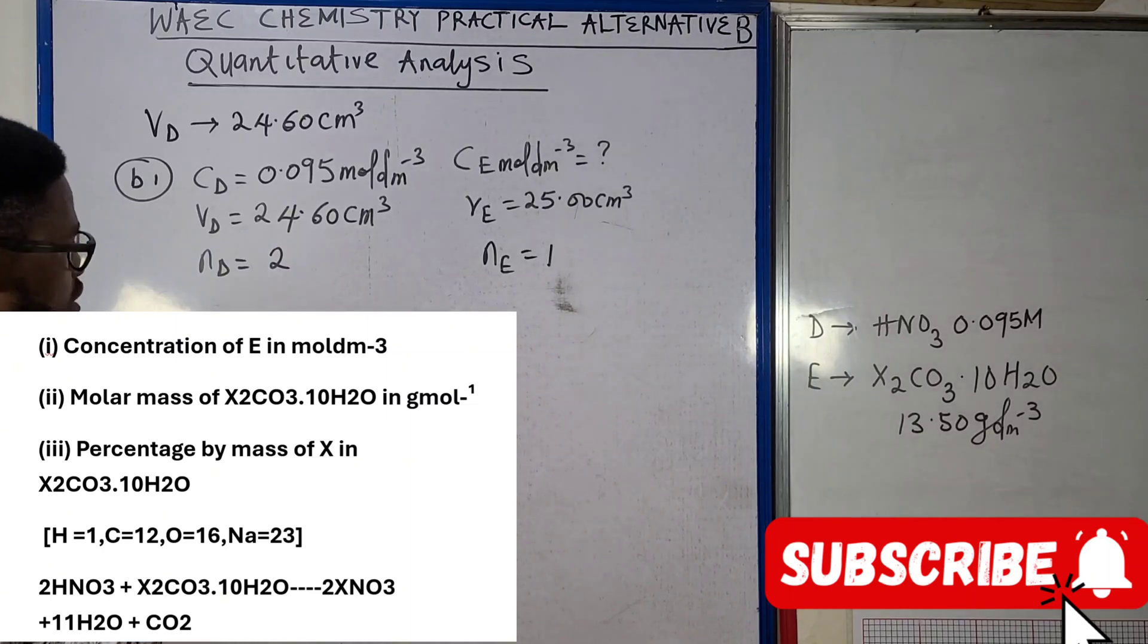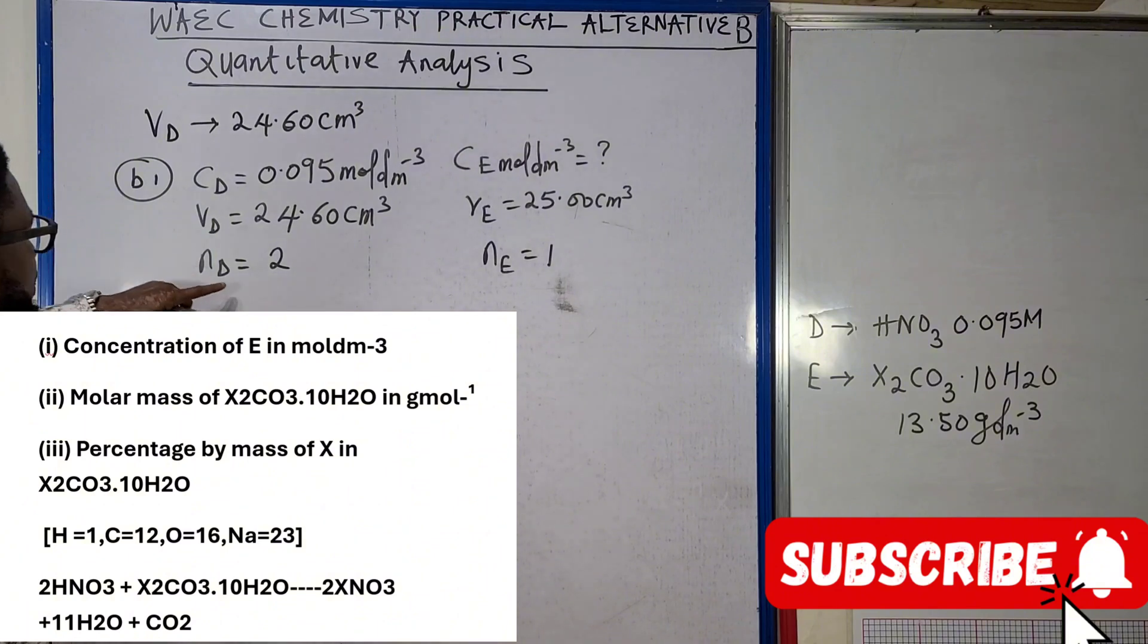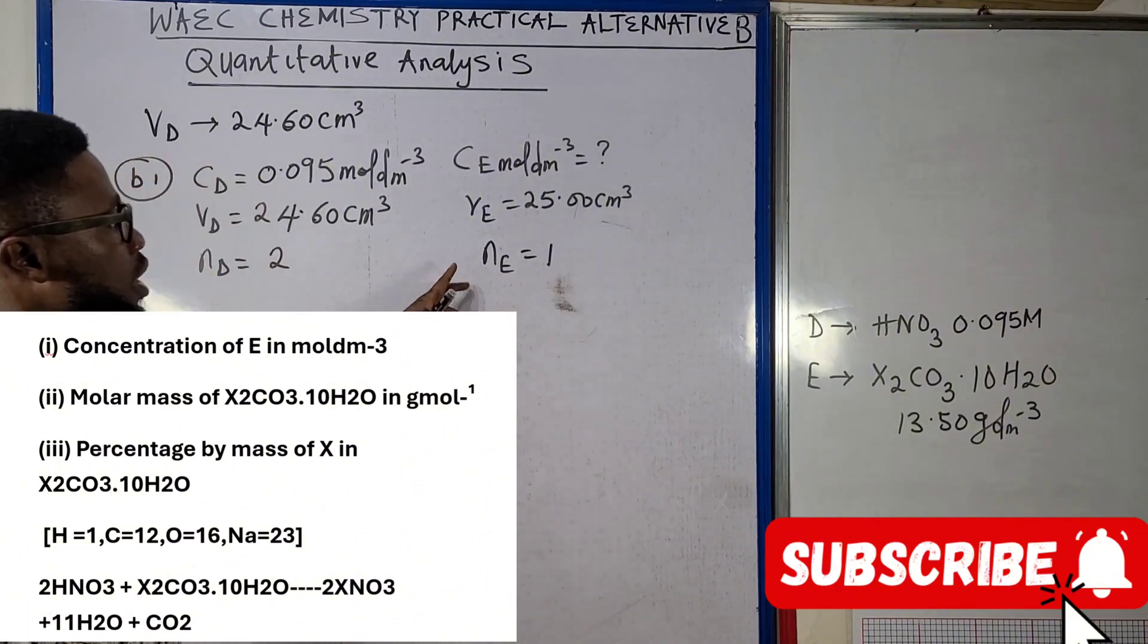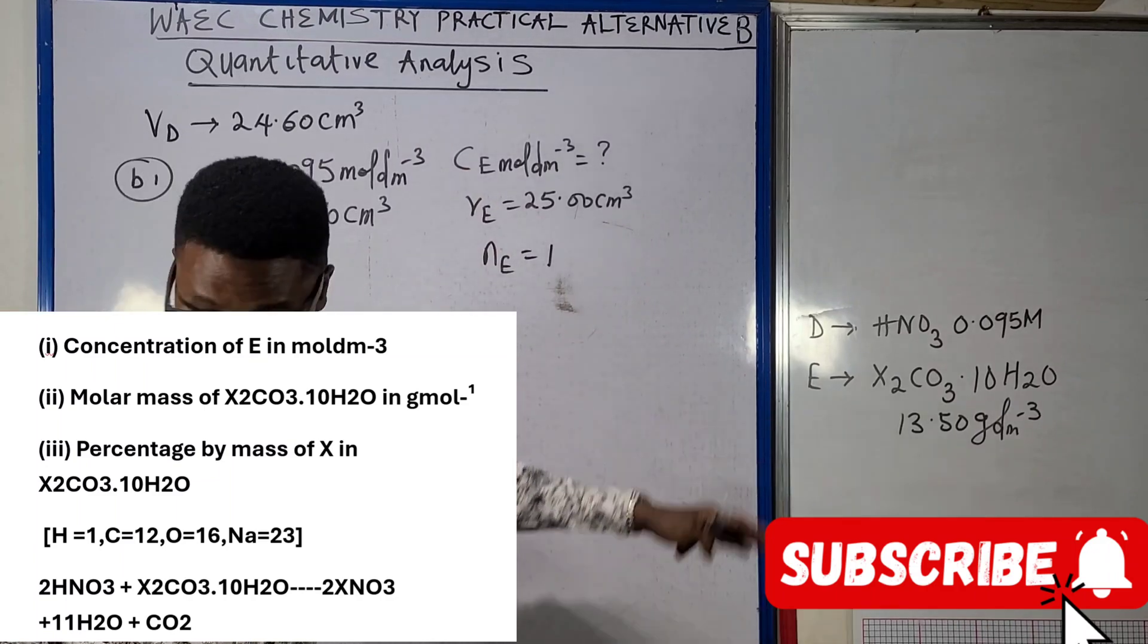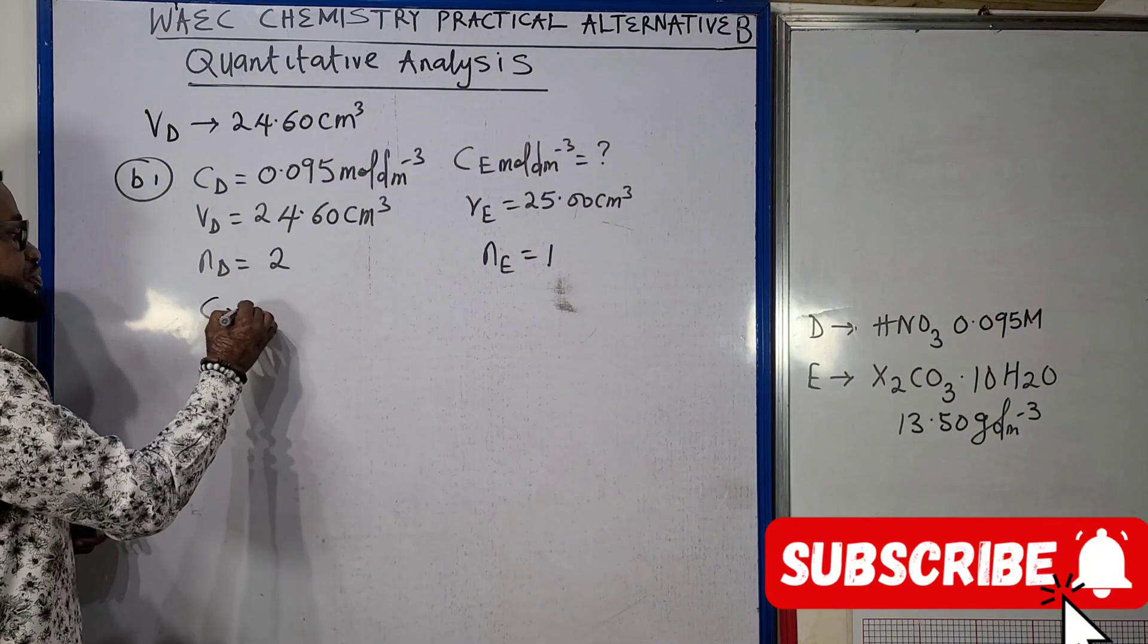From the equation, you have two moles of HNO₃ being used, you've been given the equation from the question, and you have one mole of Na₂CO₃ decahydrate being used here.